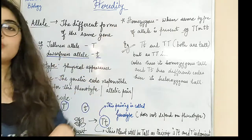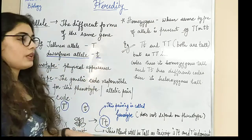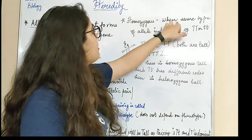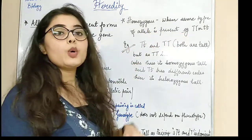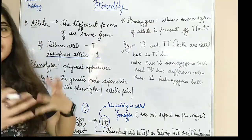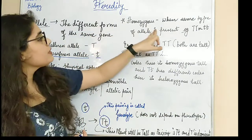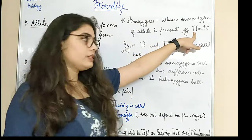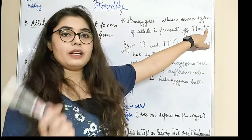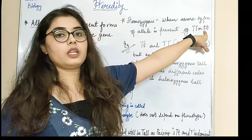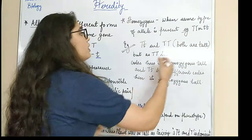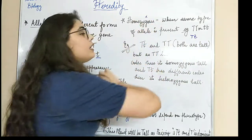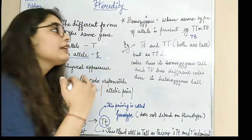Now there are two things: homozygous and heterozygous. What is homozygous? When the same type of allele is present. Homo means same, hetero means different. So homozygous means when same type of allele is present — that is capital T, capital T, or small t, small t. If it is capital T, small t — two different things — then it is not homozygous.